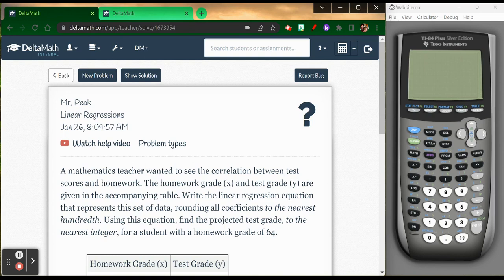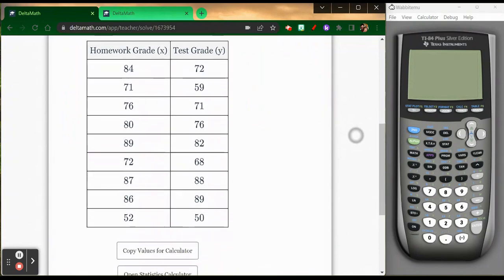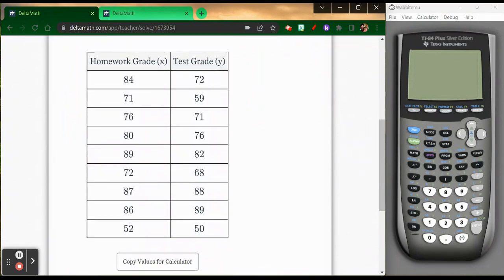We have two pieces of information that we need to try and find. One is the linear regression equation. And then the second part is we're going to use that equation to project a test grade. We're going to guess what the test grade is going to be if a student has a homework grade of 64. Looking at the table, they nicely gave us these homework grades as X's and test grades as Y's. I'm going to put this information into my graphing calculator.